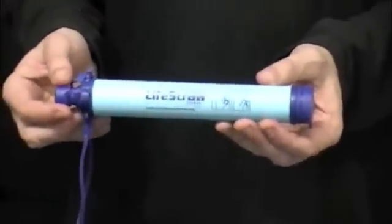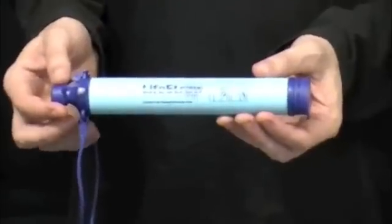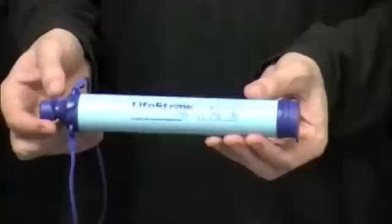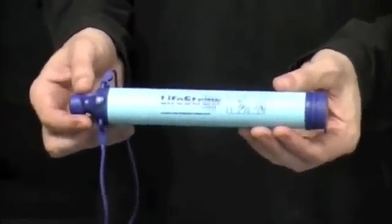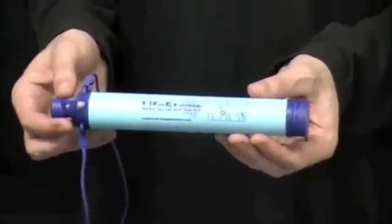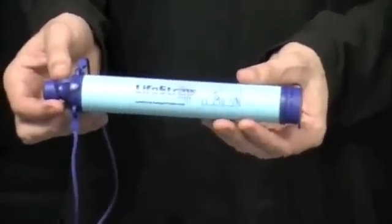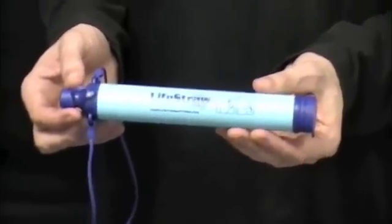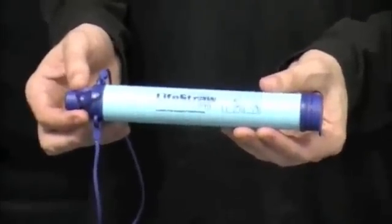The LiveStraw, according to the manufacturer, is capable of filtering up to 1,000 liters of water. It filters particulate matter down to 0.2 microns, is effective at removing 99.9999% of waterborne bacteria and 99.9% of protozoan parasites. These include Giardia, Intamoeba, and Cryptosporidia. It does not filter heavy metals or desalinate water.